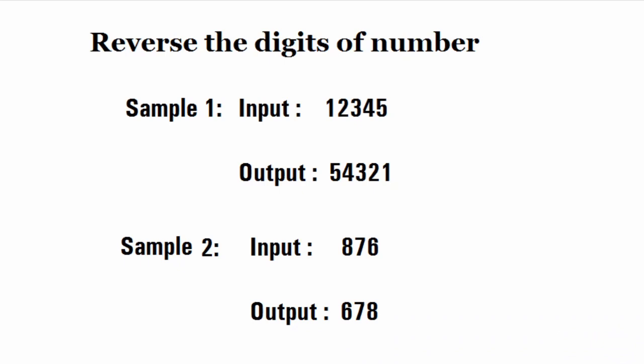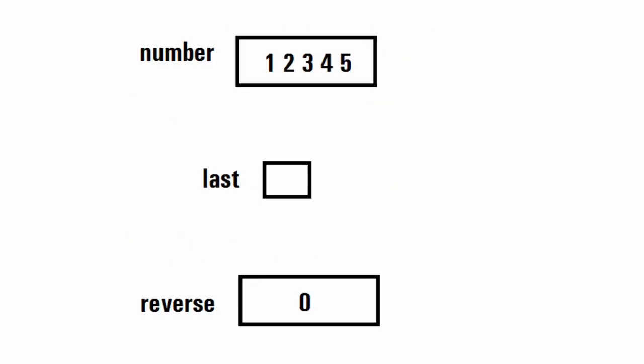Hello and welcome to Coding Bytes. Today's question has been asked in Wipro and TCS last year. The question is: reverse the digits of a number. For example, the first sample input is 12345, and the output should be 54321. For the second sample input 876, the output should be 678. Before moving to the solution, let's see the logic to solve this problem.